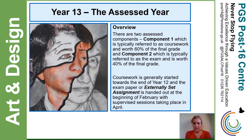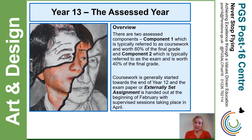Moving on to Year 13, the assessed year — we've already looked at the overview: component one is the coursework worth 60% of the final grade, and component two is the exam worth 40%. Coursework for Year 13 is generally started towards the end of Year 12 to give us the best chance of generating enough work volume-wise and also developing the written component. The exam paper, or externally set assignment as it is known by the exam board, is handed out at the beginning of February, and students have a number of months to work on the preparation before completing the supervised sessions in April.